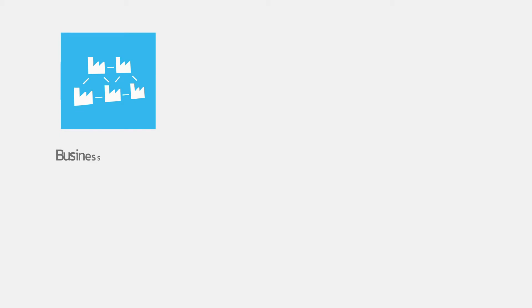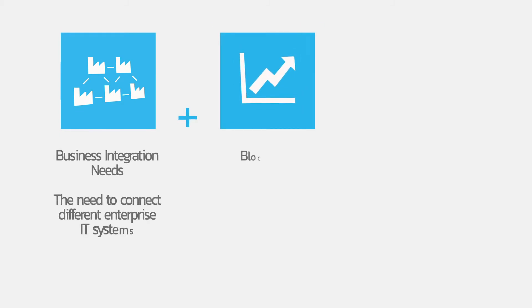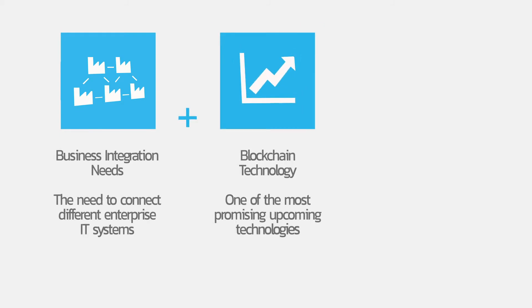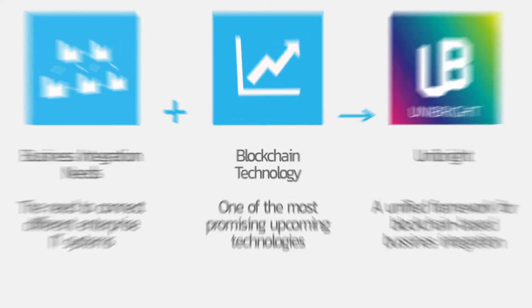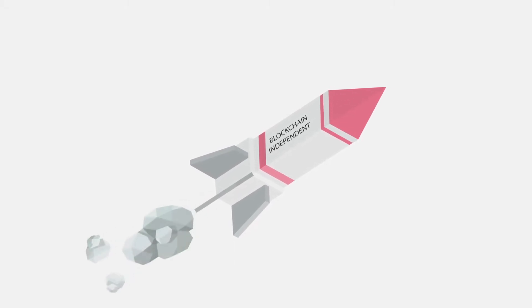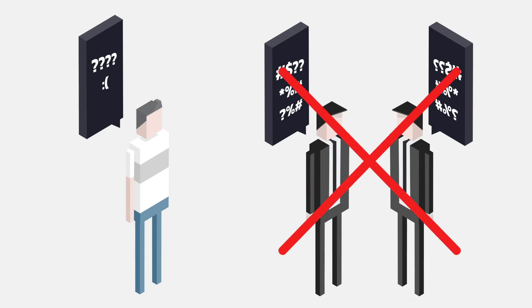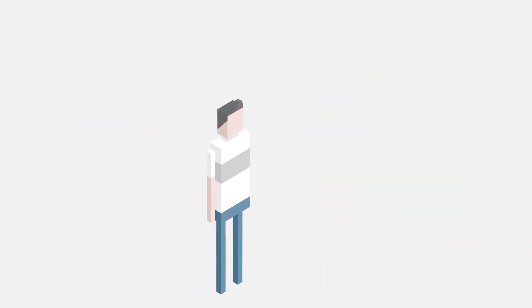We focused on the existent and increasing need for business integration and identified the blockchain field as one of the most promising upcoming technologies in the IT sector. Unibright is a unified framework for blockchain-based business integration. Our framework creates a standard to be totally independent from specific blockchain implementations — there is no need to be an expert in a special kind of blockchain technology anymore.